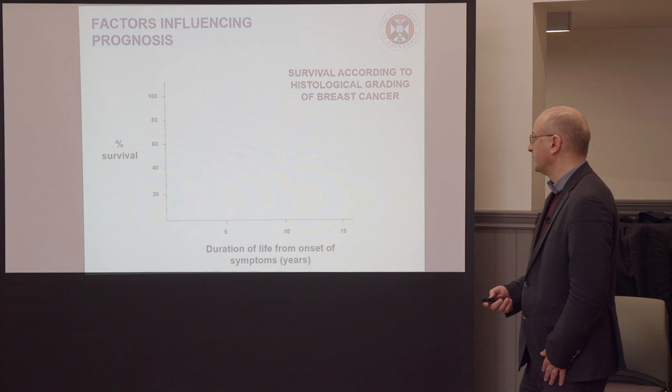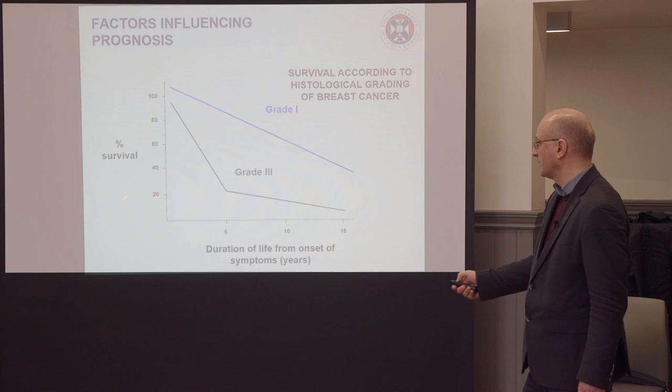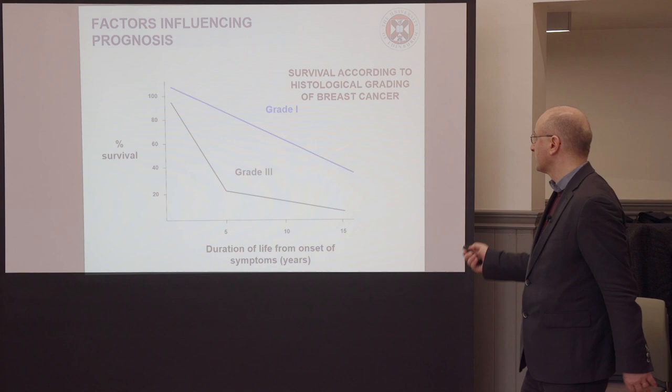Survival according to histological grading of breast cancer: grade one, the least malignant, shows this survival from the first to the 15 years; this is grade three. Clearly you have much worse prognosis if your breast cancer is more malignant and more aggressive histologically than if it's not.